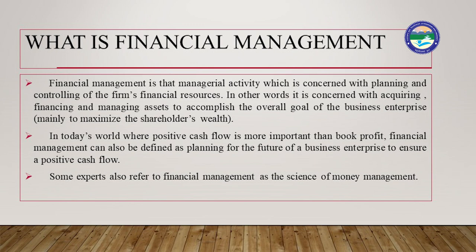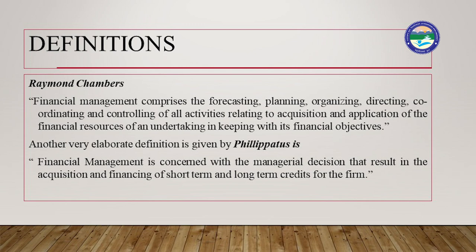Some experts also refer to financial management as the science of money management. There are some formal definitions. The first one is by Raymond Chambers: financial management comprises the forecasting, planning, organizing, directing, coordinating, and controlling of all activities relating to acquisition and application of the financial resources of an undertaking in keeping with its financial objectives. Another elaborate definition by Philip Atias is: financial management is concerned with the managerial decisions that result in the acquisition and financing of short-term and long-term credits for the firm.